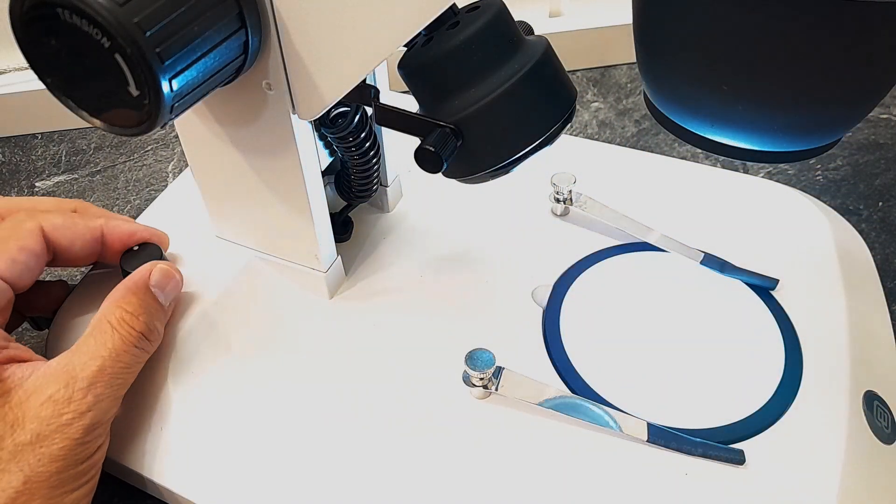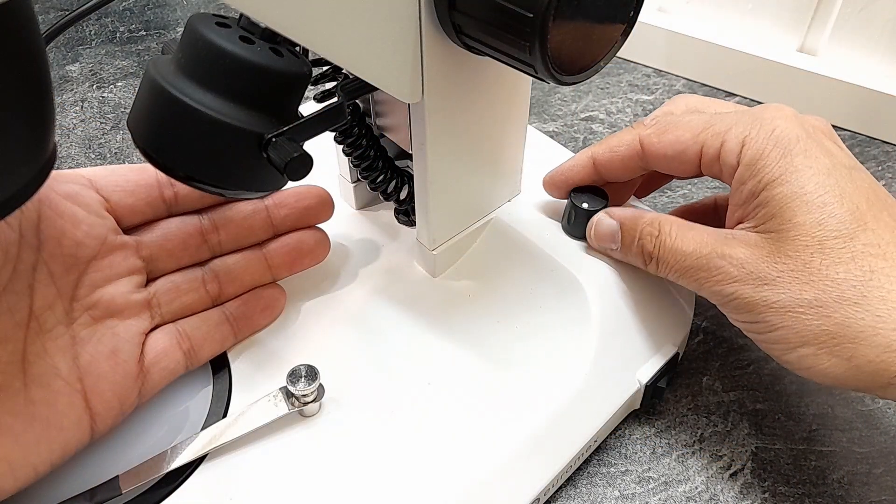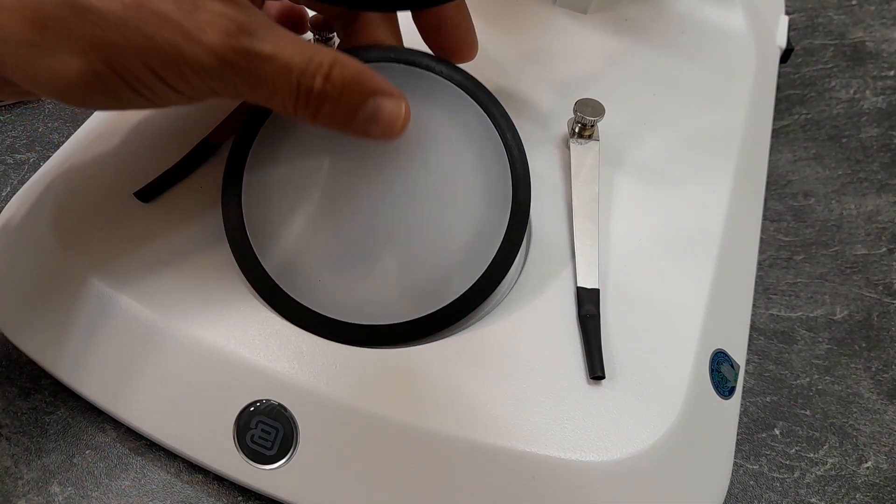The microscope has two LED lamps, one in the bottom and one on the top. There is one main switch that controls both of them. However, the light intensity can be regulated separately and independently.